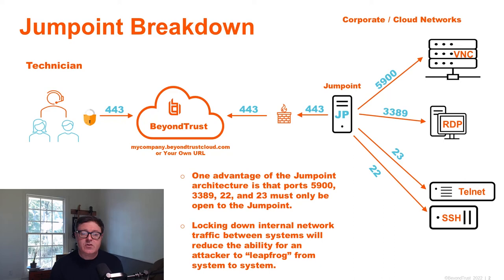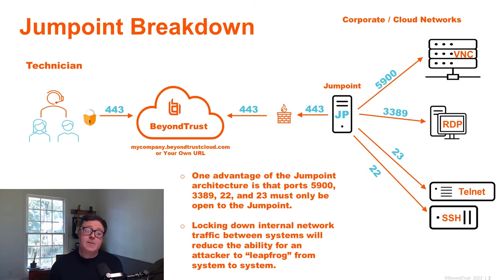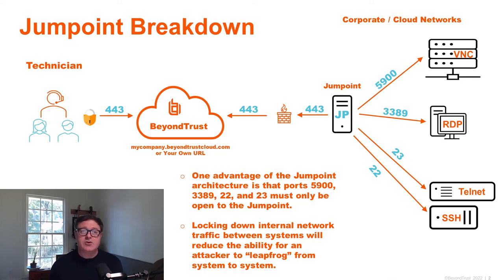One advantage of a jump point architecture — again, bastion host jump point in this case — is that those ports only need to be open to the jump point. There's not a need in this type of architecture for systems to be able to connect to one another over these ports. The second note is that locking down this internal network traffic between systems reduces the ability for someone to leapfrog between systems. So you give a technician the ability to connect to server one on RDP — that doesn't mean that you want them to be able to connect to server two on RDP and leapfrog throughout the network because they have connectivity to that first system. That's something you're able to lock down in BeyondTrust Privileged Remote Access.